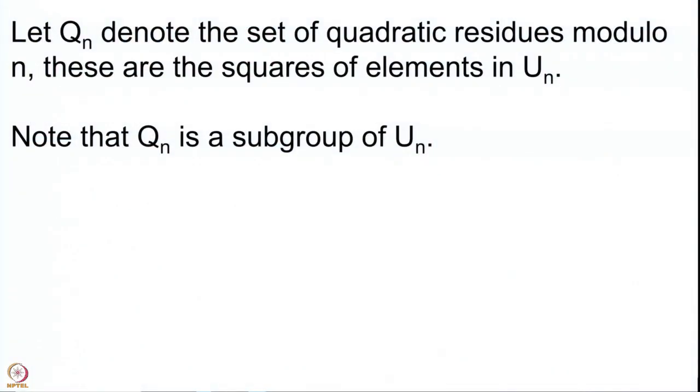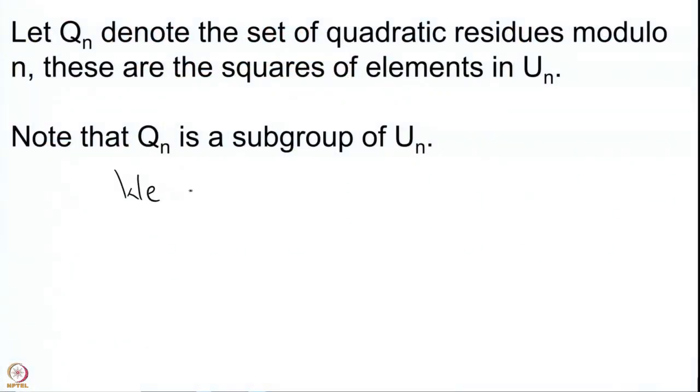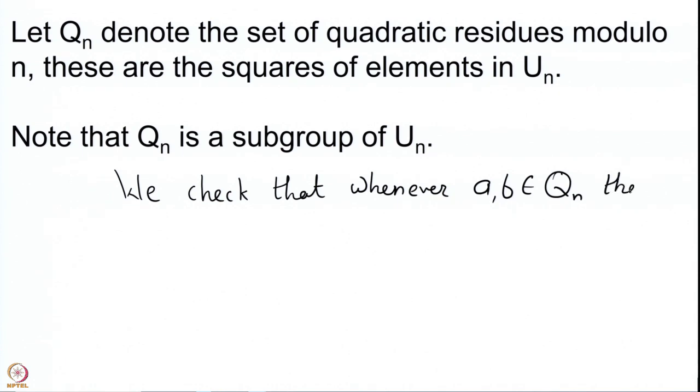There is one small remark that is very useful in many of the computations we are going to do later: Q(n) is a subgroup of U(n). There are several ways to check when some subset is a subgroup. The essential thing is that it is closed under multiplication, 1 is there, and the inverse of every element is also there. All these things can be combined in the following statement: we check that whenever a, b are elements in Q(n), then ab⁻¹ is also in Q(n).